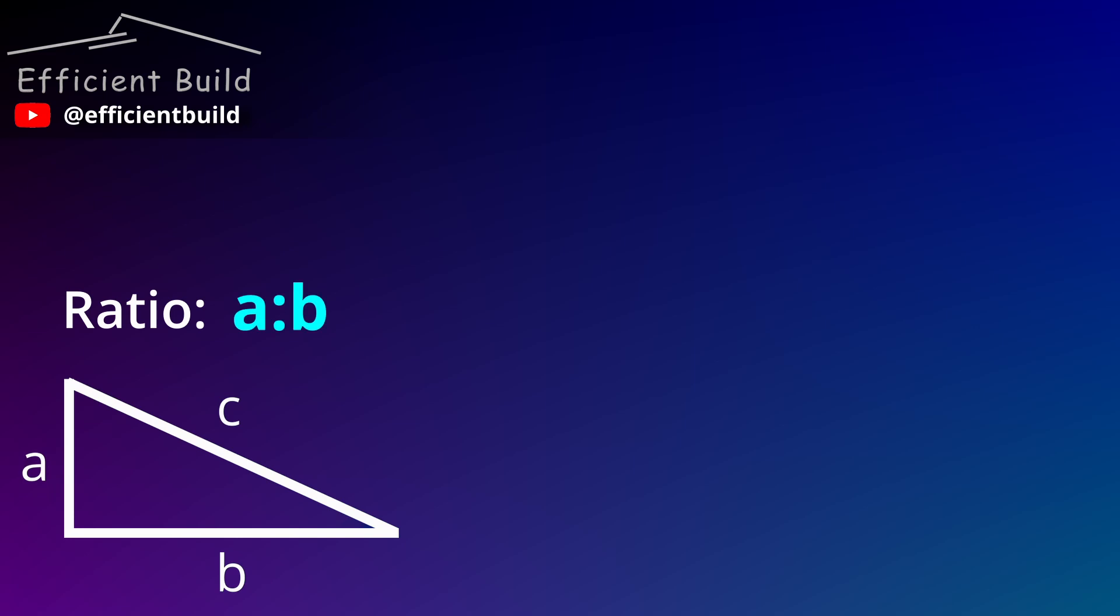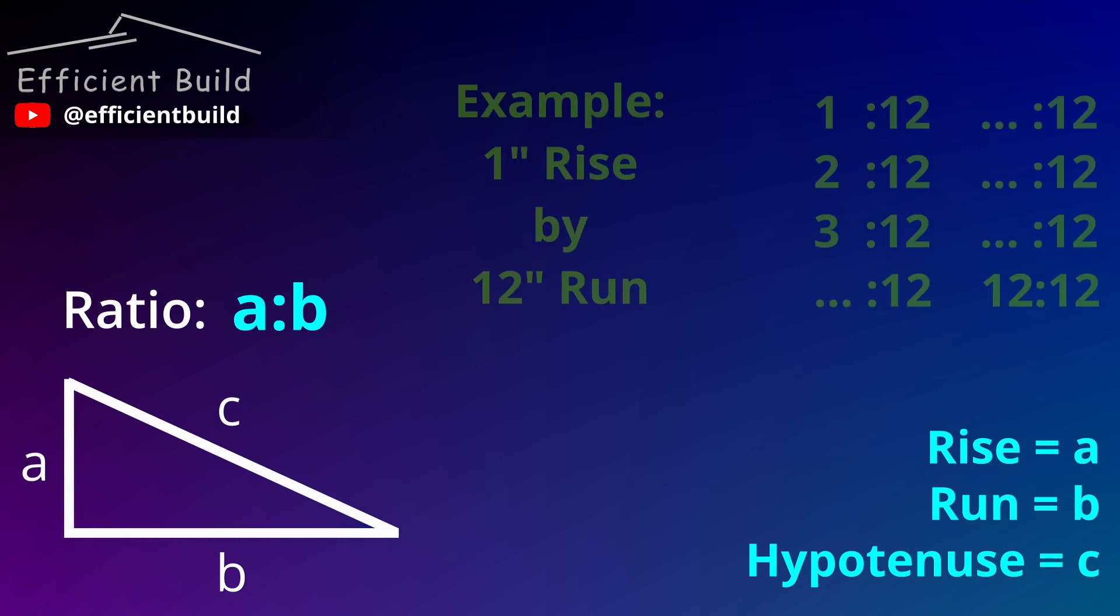A roof is defined by a ratio of rise and run, so what that means is how much the roof rises per every 12 inches of run. For example, you would get 1:12, 2:12, 3:12, etc.